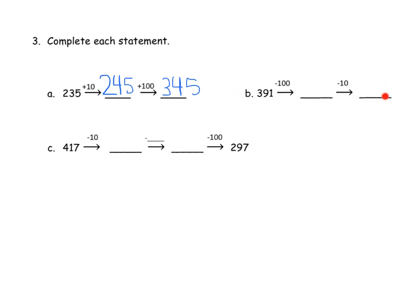Let's do another one. So 391 minus 100 gives us 291, minus a 10 — that means we're going to lose a dot in the 10s column — so that's going to give us 281.